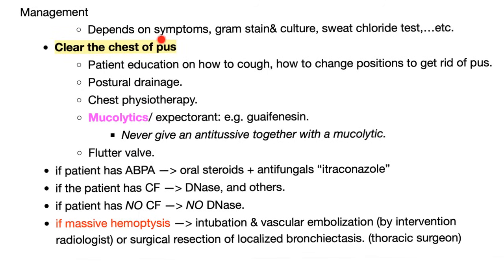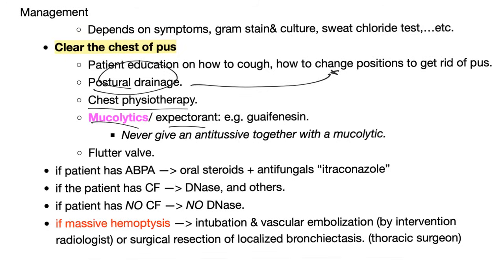How to manage bronchiectasis: based on symptoms, Gram stain/culture, sweat chloride test, etc. Clear the chest of pus — educate the patient on coughing technique and position, postural drainage, chest physiotherapy, and mucolytics (also known as expectorants), such as guaifenesin. Never combine an antitussive with a mucolytic — it's contradictory. A mucolytic loosens mucus so you can cough it out; an antitussive suppresses the cough reflex. Combining them is counterproductive.